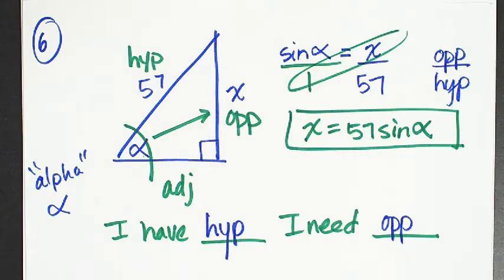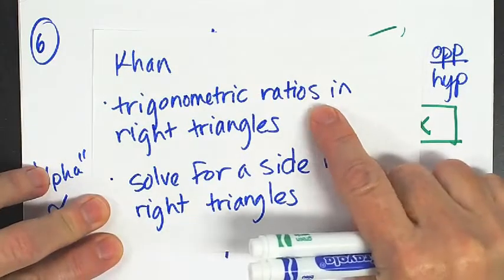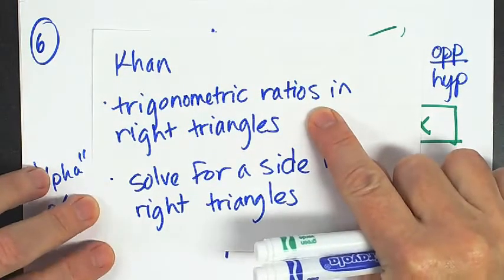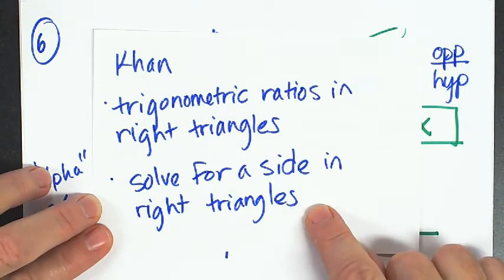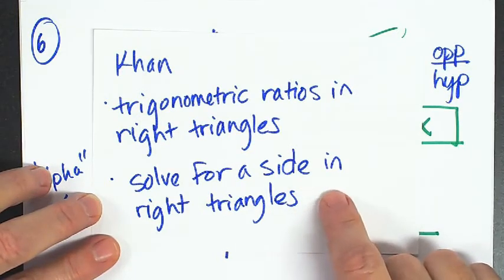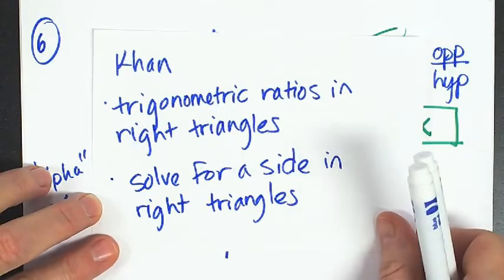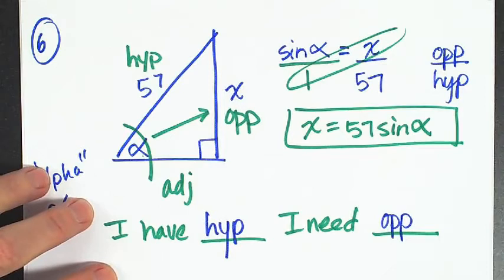I went through those steps kind of fast, but you'll have a poster, and hopefully by now you have really mastered this. If not, search up these two Khan assignments — one will help you just pick out what sine, cosine, and tangent are, and the other walks you through the process. You do need a calculator for those because Khan will not accept an expression; it wants the decimal answer.